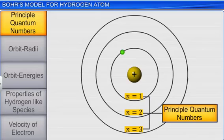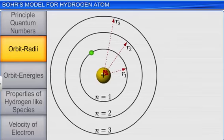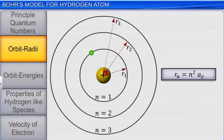The radii of stationary states or orbits can be given by the expression: radius of the nth orbit, Rn, is equal to n square multiplied by the constant a0, which is equal to 52.9 picometer.